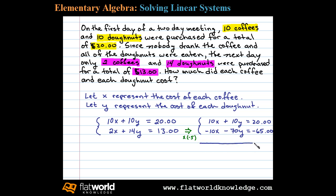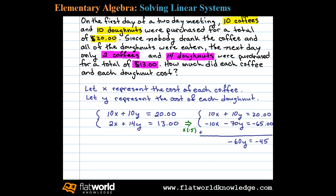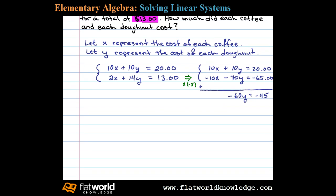Now we can see the variable X is lined up to eliminate. Adding the equations together, we have 10X minus 10X is 0X. 10Y minus 70Y leaves us with negative 60Y, equals 20 minus 65, which is negative 45. Now to isolate Y, let's divide both sides by the coefficient negative 60. That leaves us with Y equals positive 3/4, or Y equals 0.75, or 75 cents.